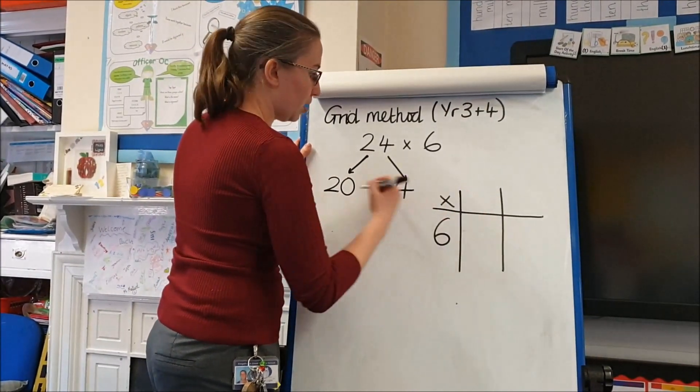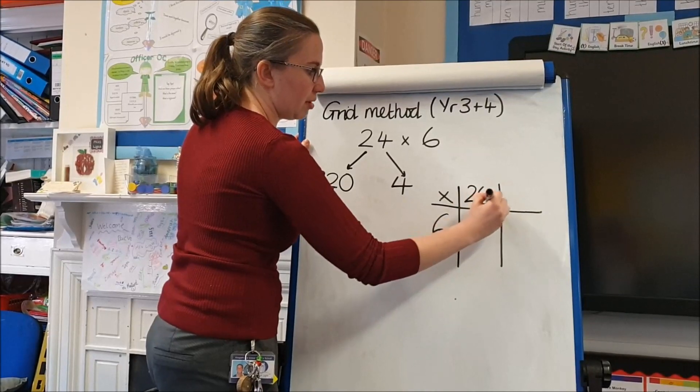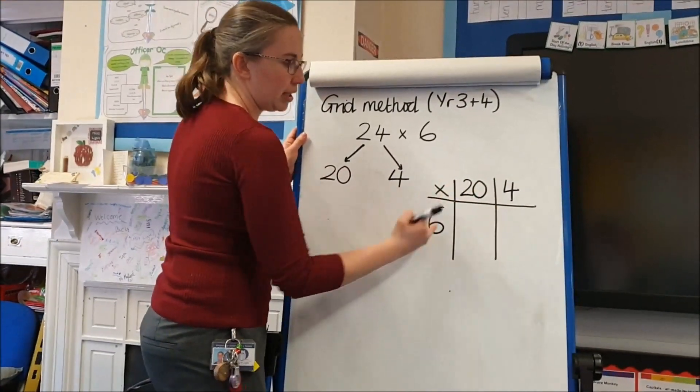We would have the number we're multiplying by, we would partition our other number like so, and then we are multiplying each part.